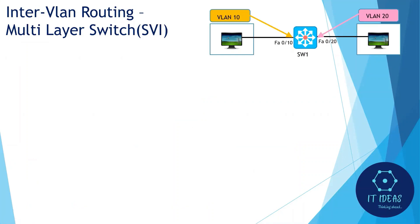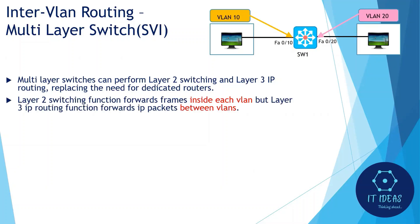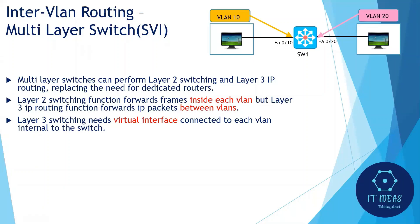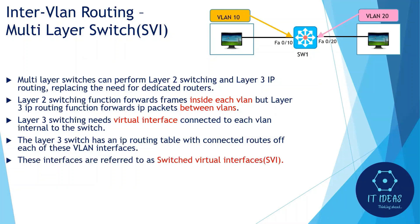The next method is inter-VLAN routing using a multi-layer switch. Multi-layer switches can perform both layer 2 switching and layer 3 IP routing, replacing the need for dedicated routers. Layer 2 switching forwards frames inside each VLAN, while layer 3 IP routing forwards IP packets between VLANs. Layer 3 switching uses virtual interfaces connected to each VLAN internal to the switch. The layer 3 switch has an IP routing table with connected routes for each VLAN interface. These virtual interfaces — referred to as Switched Virtual Interfaces (SVIs) — act like router interfaces with an IP address and mask, and exist for VLAN 1 by default.